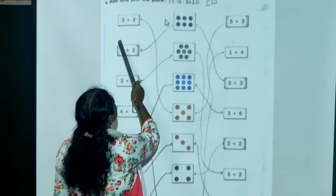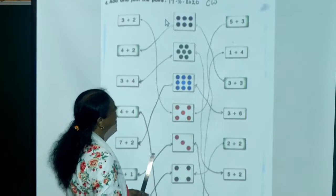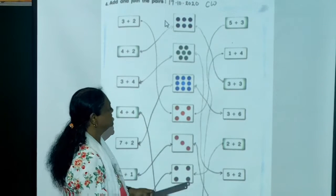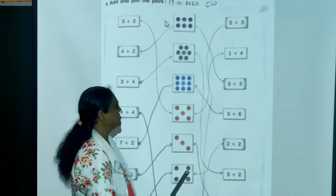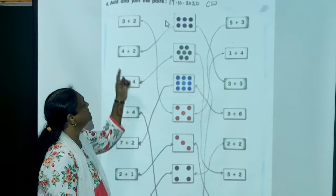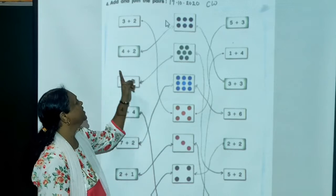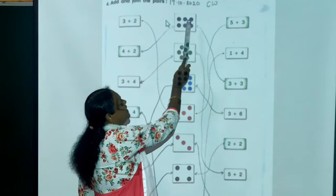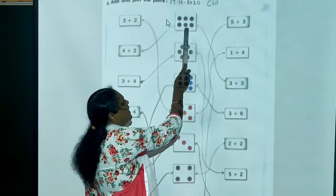Now, you can see here, 3 plus 2 is 5. So you have to count these dots and see where 5 is now. Count: 1, 2, 3, 4 and 5. Like this, you have to match it. 4 plus 2 equals 6. So 6 is here, counting 1, 2, 3, 4, 5, 6.